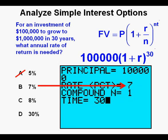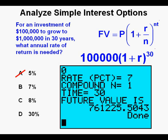Now we try the same thing but with 7% for answer B. Press enter. We get about $761,000. It's closer but still not enough so we cross off answer B as well.